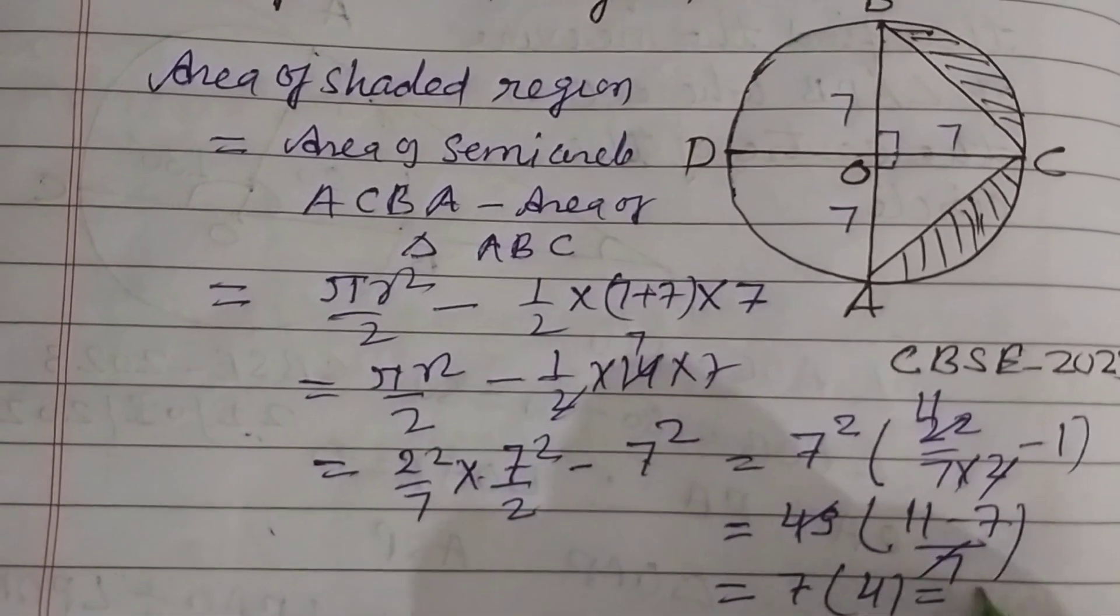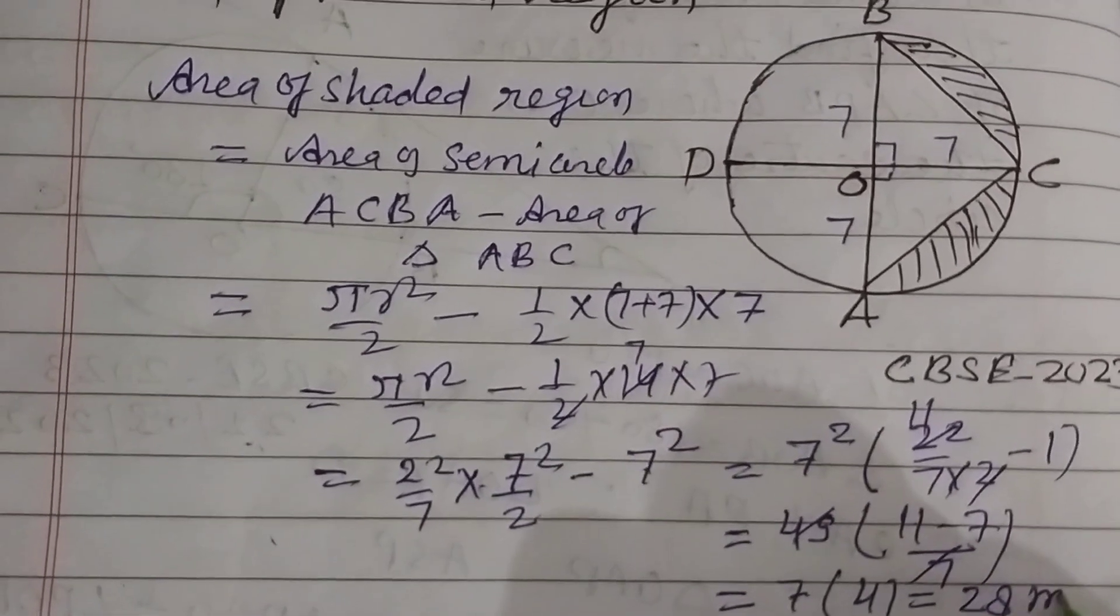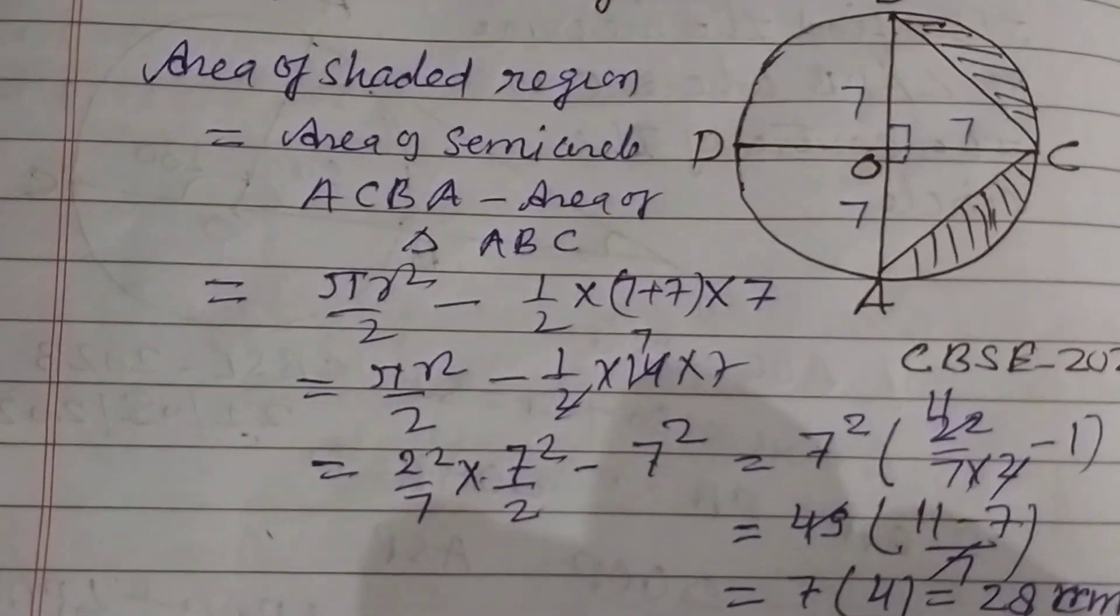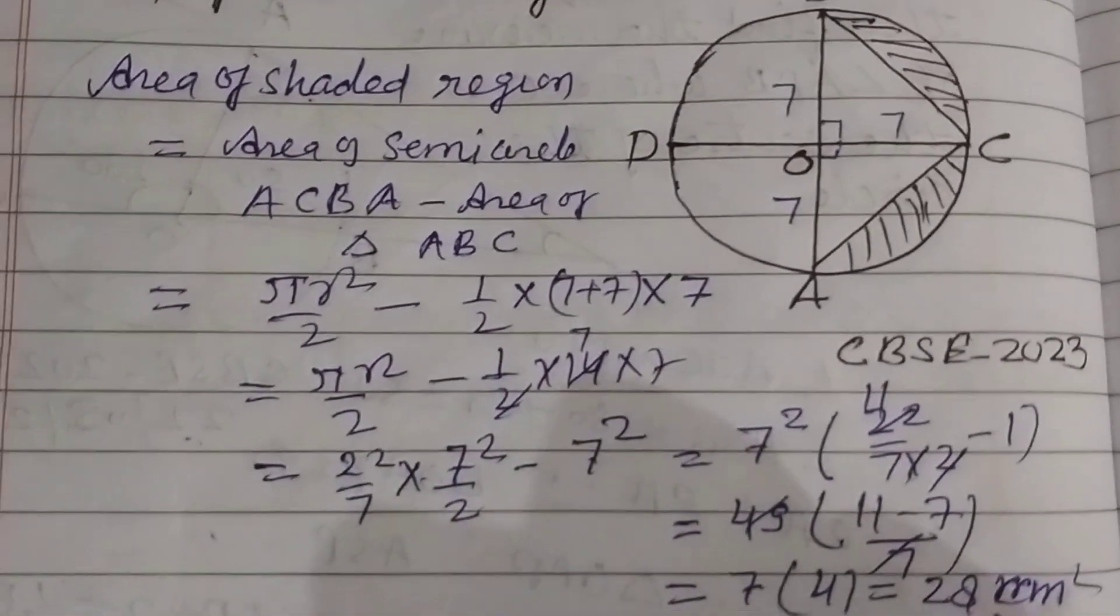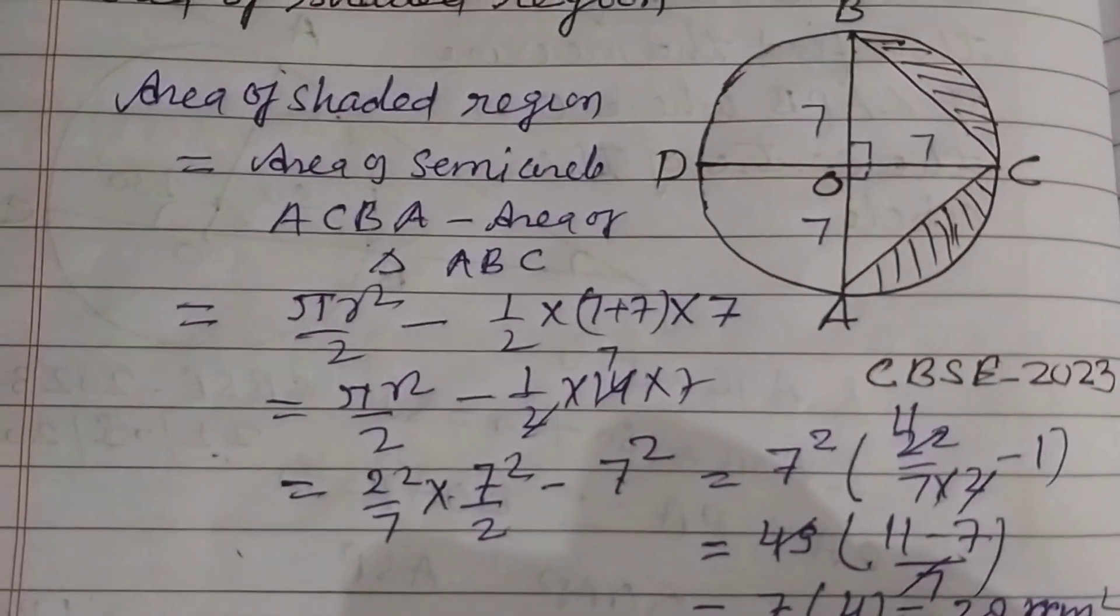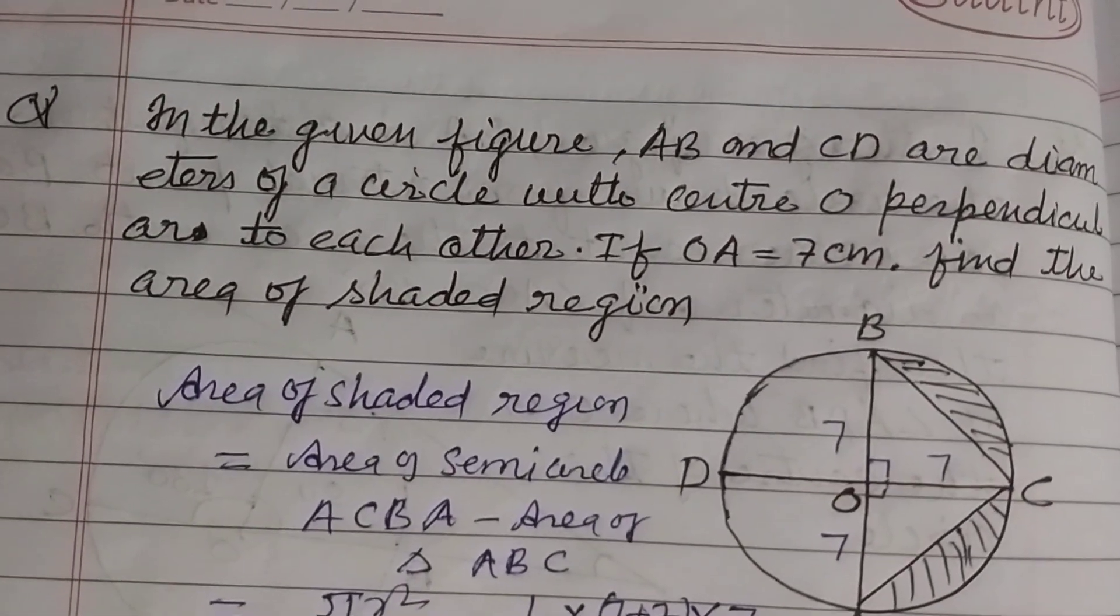So 7 times 4 is 28 square centimeters, the area of the shaded region. So I hope you got it. Please like the video, subscribe to the channel, thanks for watching.